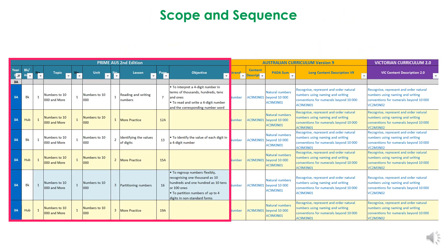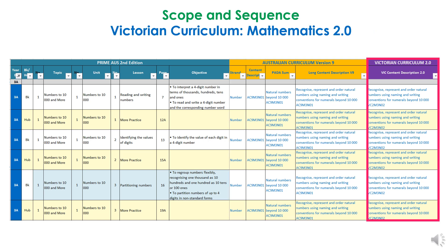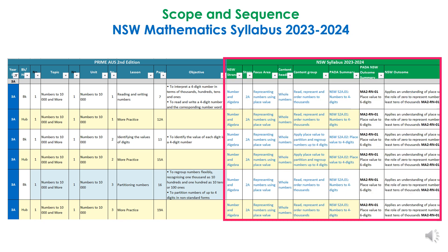There is a new scope and sequence that lists the Prime topics, units, lessons and objectives first. Then it lists references to the Australian Curriculum version 9, the new Victorian Curriculum, and the New South Wales syllabus.